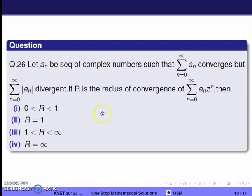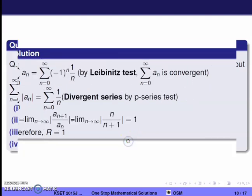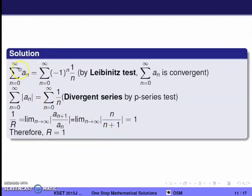Taking the example: let a_n = (−1)^n / n. Then Σ a_n is a convergent alternating series (by alternating series test). The series Σ |a_n| = Σ 1/n is divergent by the p-series test.